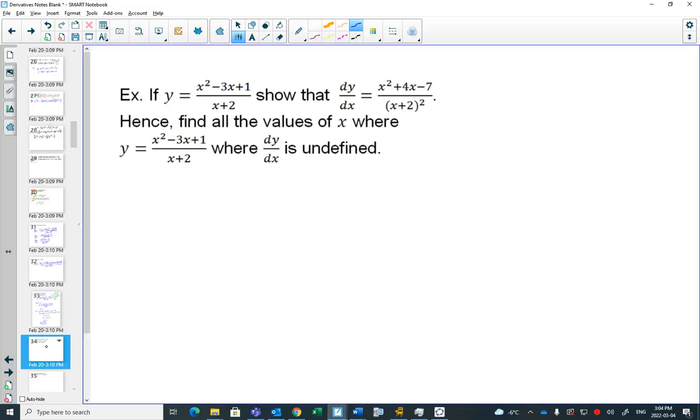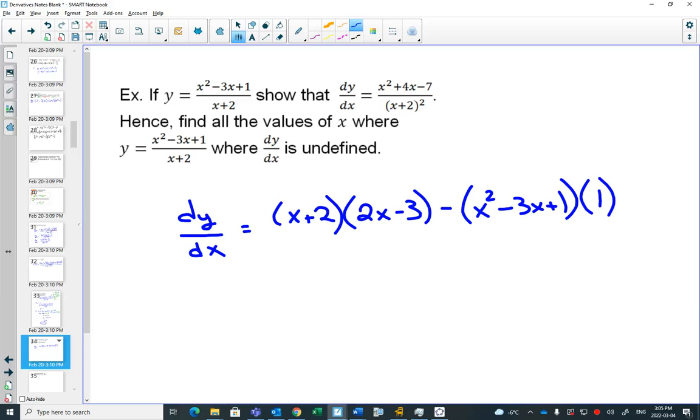Here is one of the show that ones. This is very similar to what you'll see in your homework. You've got your original equation. You want to show that the derivative is equal to what you see second. And then you want to find out where the derivative is undefined. So first of all, if I want to find dy/dx, I have a quotient rule. How do I do a quotient rule? I keep the bottom the same, multiply by the derivative of the top 2x minus 3, subtract, keep the top the same, multiply by the derivative of the bottom, and the derivative of x plus 2 will just be 1, all over x plus 2 squared.